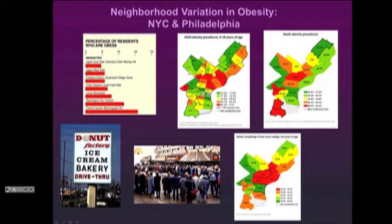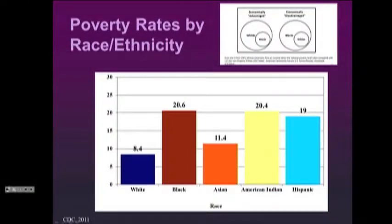When we look at obesity, we see a similar pattern. Studies in New York show a fourfold rate of obesity among adults in East Harlem compared to those on the Upper East Side — so this is not merely geographic. In Philadelphia, childhood and adult obesity distributions align closely with low-education neighborhoods. Our research has also found less availability of fruits and vegetables in lower-income neighborhoods. And to circle back: rates of poverty are much higher among blacks, American Indians, and Hispanics than among white majority populations.